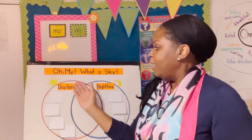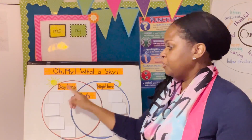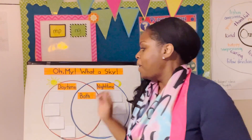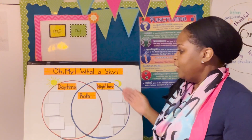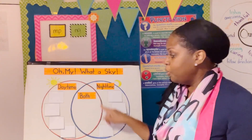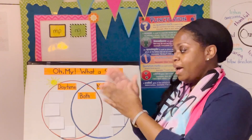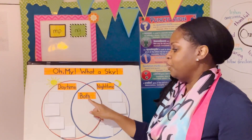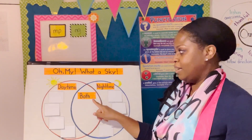Using a Venn diagram allows you to sort things into two or three circles which overlap in the middle. I will show you my Venn diagram. Here's my first circle, which represents daytime. My second circle represents nighttime. And in the middle, where both of the circles overlap, I have both daytime and nighttime.